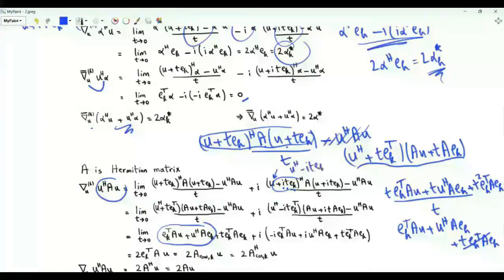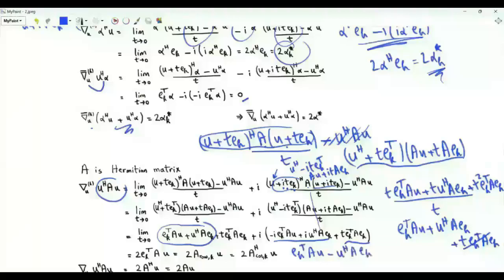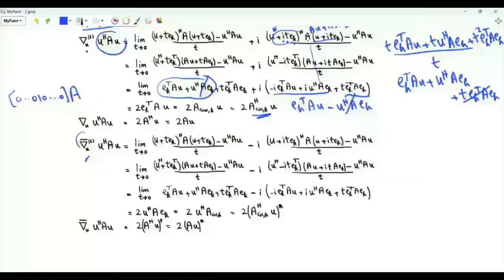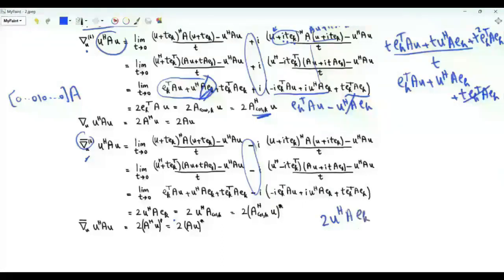Now we investigate the quadratic function u Hermitian A u, where A is a Hermitian matrix. To partially differentiate with respect to the real part of u_k, we perturb u by real t times e_k and subtract the quadratic form. Expanding gives four terms; u Hermitian A u cancels, and the surviving terms are e_k transpose A u plus u Hermitian A e_k, plus a term tending to zero. For the imaginary part perturbation with i t e_k, after expansion and applying minus i, we get e_k transpose A u minus u Hermitian A e_k. Adding these, applying the operator to u Hermitian A u yields 2 times e_k transpose A u. Applying the bar operator yields 2 times u Hermitian A e_k, which is 2 u Hermitian times the k-th column of matrix A.